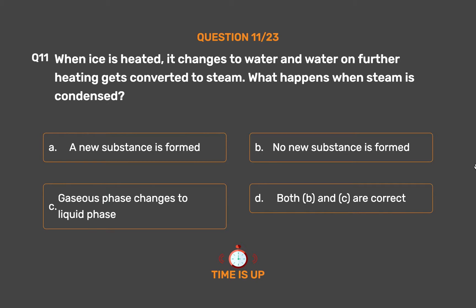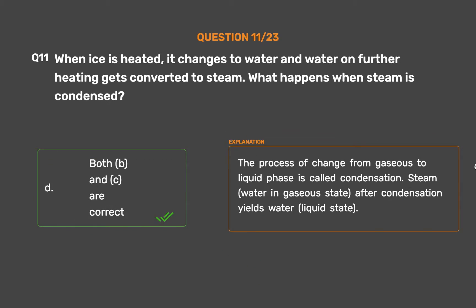The correct answer is Option D: Both B and C are correct. The process of change from gaseous to liquid phase is called condensation. Steam, water in gaseous state, after condensation yields water in liquid state.